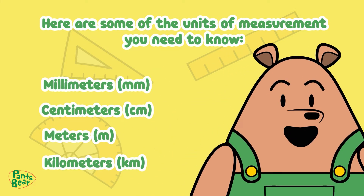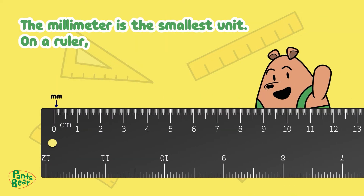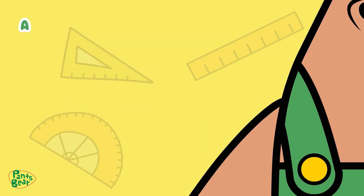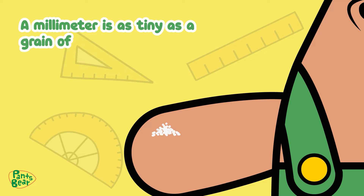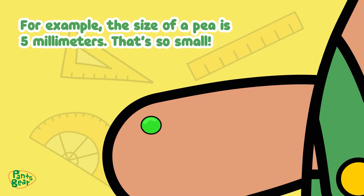Millimeters, centimeters, meters, kilometers. The millimeter is the smallest unit. On the ruler, you can find millimeters with the symbol MM. A millimeter is as tiny as a grain of sugar. For example, the size of a pea is 5 millimeters.